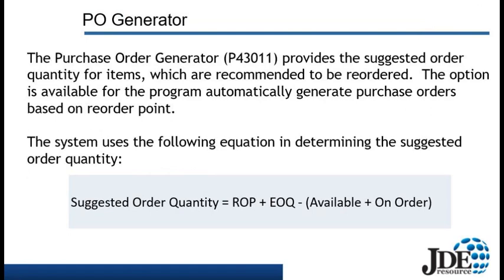The Purchase Order Generator, the P43011, provides the Suggested Order Quantities for items which are recommended to be reordered. The option is available for the program to automatically generate purchase orders based on a reorder point. The calculation for the Suggested Order Quantity is: the reorder point, plus the economic order quantity, minus what's available on hand, plus what's on order.